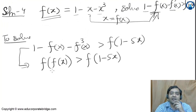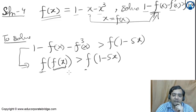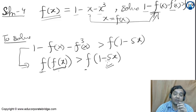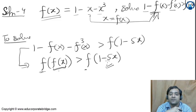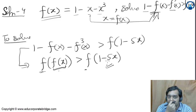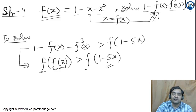Effectively, treating f(x) as alpha and (1 - 5x) as beta, we have f(alpha) > f(beta). To solve for x, we need to get rid of f. For that, we need to know whether f is an increasing or decreasing function.